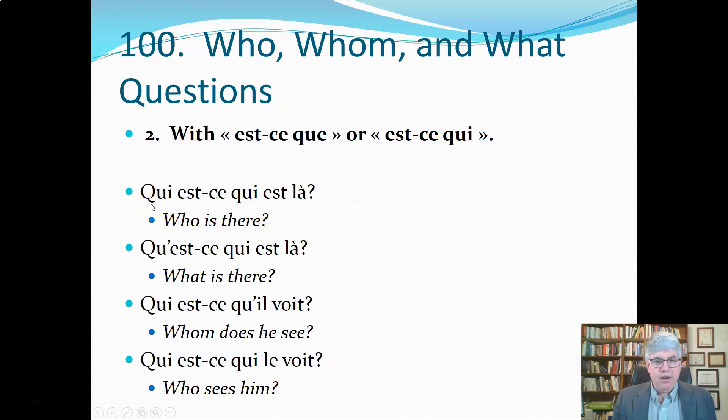If we want to ask who is there, we can say qui est-ce qui est là? So we've got qui, then we've got est-ce qui, our question phrase. We don't translate est-ce qui. Who is there? We can also have qu'est-ce qui est là. Here we've got the que, what, the est-ce qui. We don't translate it. Là—what is there?